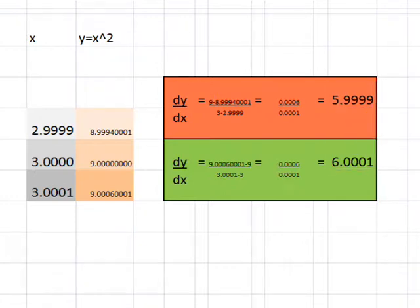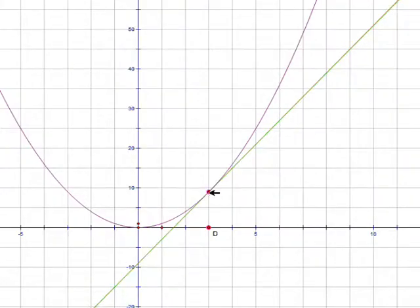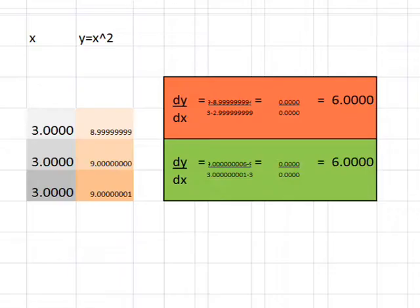Now if I really exaggerate this, so I zoomed in to, I'm going to put 8 noughts and then a 1. Then Excel can't tell the difference. Now it doesn't guarantee that the gradient at the point is exactly 6, but it looks like it might well be. The only way we can prove what the actual numbers are here is by looking at algebra.